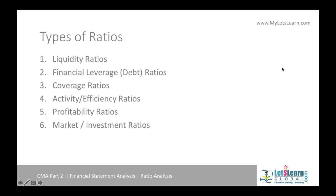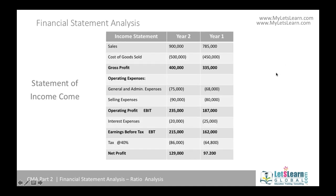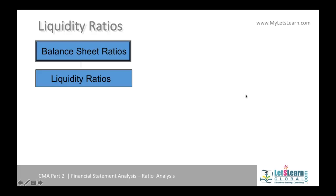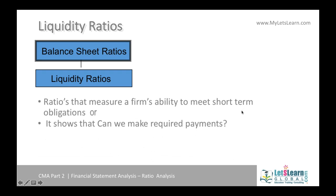Liquidity ratios talk about how liquid the firm is — how a company maintains liquid assets to meet its current obligations. We'll take an example using an income statement and a balance sheet across two periods: Year 1 (prior year) and Year 2 (recent year). The information collected from current assets and current liabilities helps us analyze the current financial position of a company.